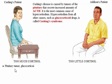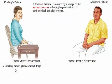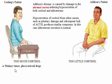Addison's disease is caused by damage to the adrenal cortex, inducing hyposecretion of both cortisol and aldosterone. Hyposecretion of cortisol from other causes, such as pituitary damage and subsequent lack of ACTH, produces similar symptoms. In this case, aldosterone secretion is normal.